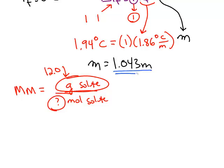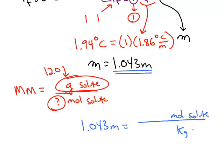Moles of solute we can get because we have the molality of the solution, 1.043 molal solution. Remember, that fraction means moles of solute per kilogram of solvent. And in this case, the solvent is water. The problem told us that we had 80 grams of water, so that's 0.08 kilograms of water. We're using this molality as a conversion factor to find the moles of the solute. And when you cross multiply, the moles of the solute is 0.08344.